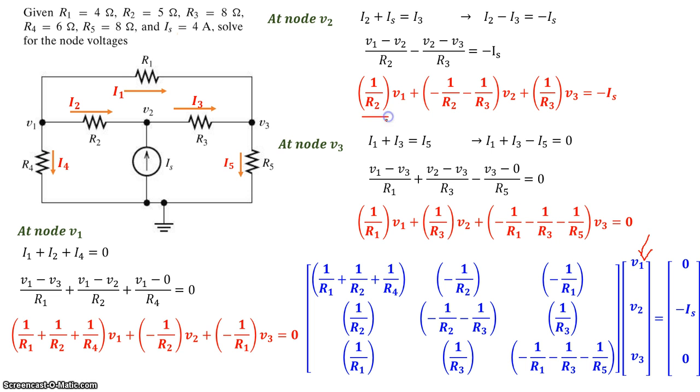Similarly, 1 over R2 is right here. Coefficient of V2 is right here. Coefficient of V3 is right here. Similarly, this is here. Coefficient of V2 is here. And on the right-hand side, we have 0, so that's 0, minus Is, so minus Is, and 0.